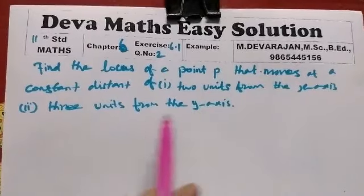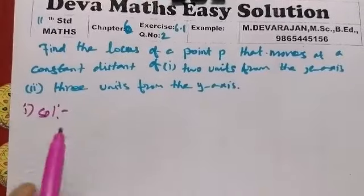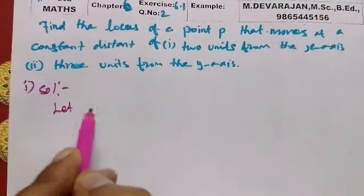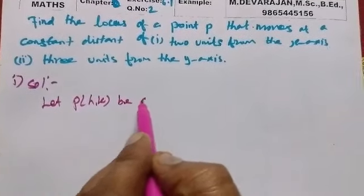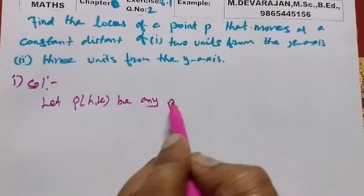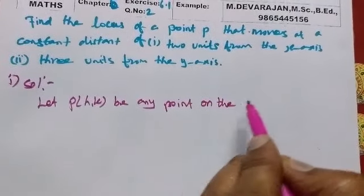From the X axis second one three units from the Y axis. First one: let P(h,k) be any point on the locus.